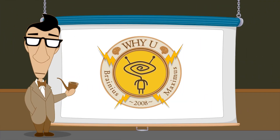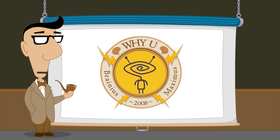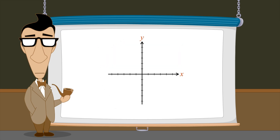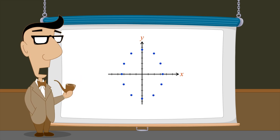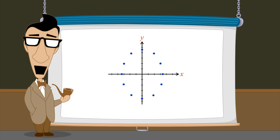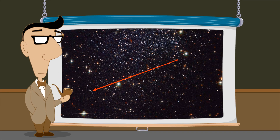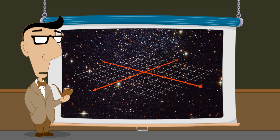Hello, I'm Professor Von Schmohawk and welcome to Why U. In the previous lecture, we saw how to construct a two-dimensional Cartesian coordinate system which allows us to graphically display ordered pairs of real numbers, or sets of these ordered pairs, as points in a plane. We did this by taking the Cartesian product of the one-dimensional number line with itself to form the two-dimensional Cartesian plane.